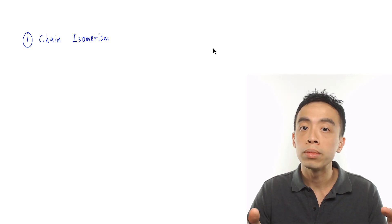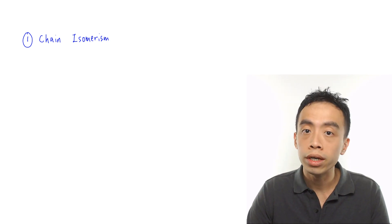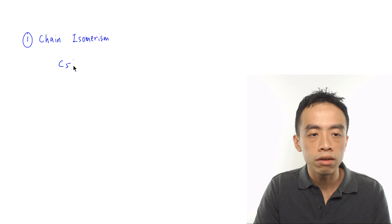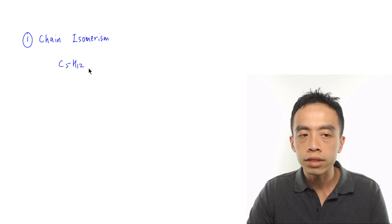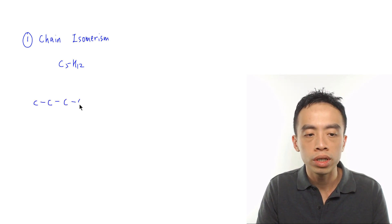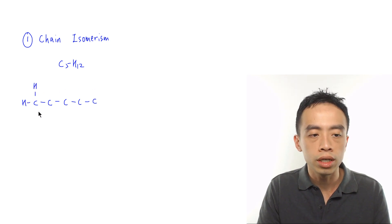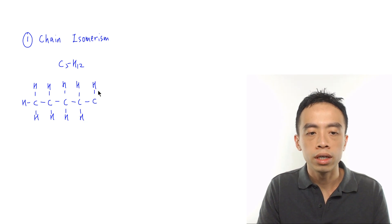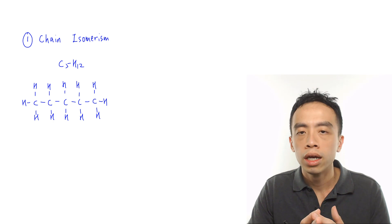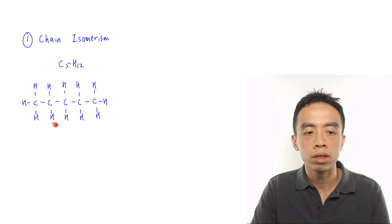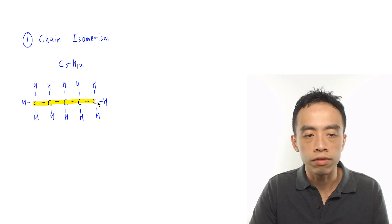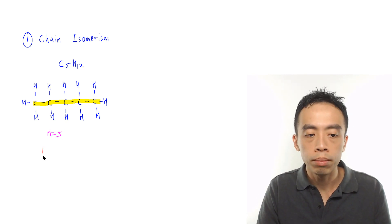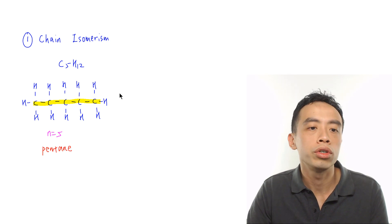Chain isomers have the same number of carbons, but the way the carbon chain is arranged is different. We will use an alkane as an example with the molecular formula C5H12. The first chain isomer is a straight chain of 5 carbons, giving 3H, 2H, 2H, 2H, 3H — a total of 12 hydrogens, confirming C5H12. The longest possible carbon chain is n = 5, and this compound is called pentane.